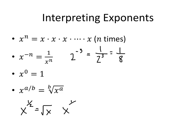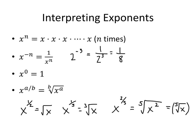If we had x to the 1 third power, that would mean the cube root of x. And if we have x raised to a power where the top of the fraction isn't a 1 — something like x to the 2 fifths — then the bottom of the fraction tells us the type of root, so the fifth root, and the top tells us the power that x is raised to on the inside. It's equivalent to write this as the fifth root of x, squared. Those are two different ways to write the same thing.